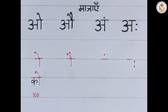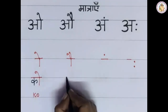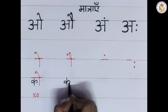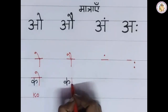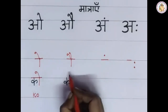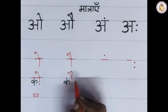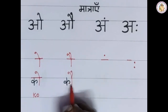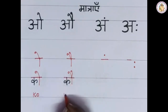Next one is the 'au' Matra. First write the vyanjan K. Next to that, draw one standing line. On the top, draw two slanting lines by touching the standing line. This gives 'Kau'.